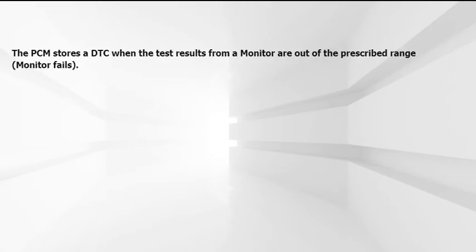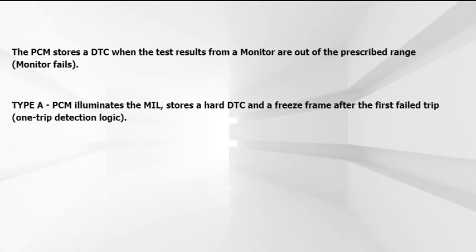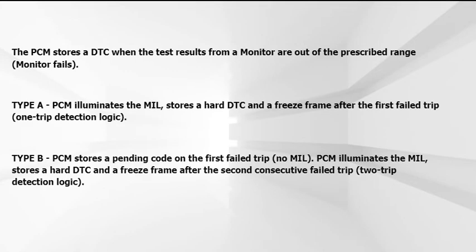The PCM will store a DTC when the test results from a monitor are out of the prescribed range. When a monitor fails, with type A failures, the PCM will store a hard code and activate the MIL after the first trip. This is known as one-trip detection logic.